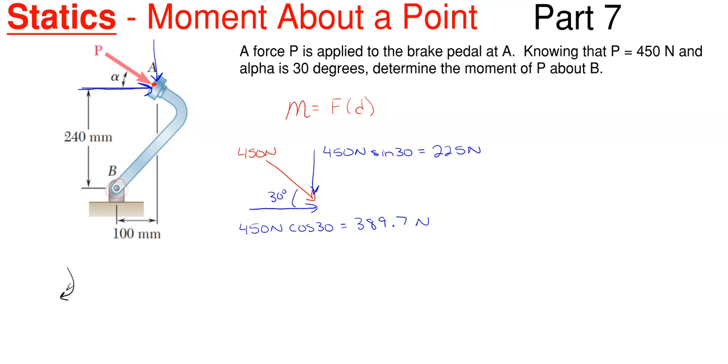So let's go ahead and sum moments about B. I'll take clockwise as positive, and what we are going to have here, let's take our vertical one first, which would be the 225 newtons.